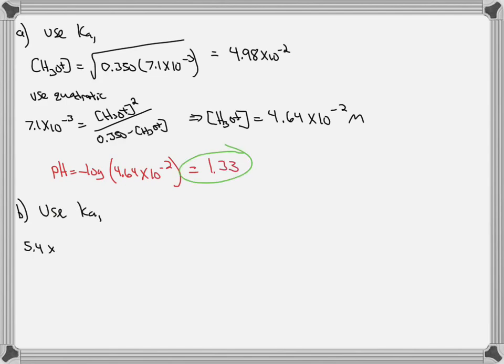For the next one, again we'll use Ka1 of oxalic acid this time, and if we needed to use the quadratic up here with this large of a Ka value, an even larger Ka value is going to guarantee that we need to use the quadratic.